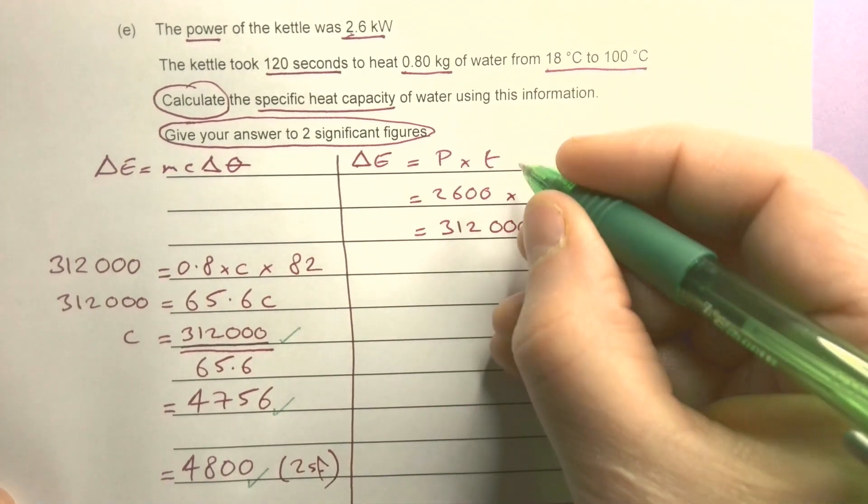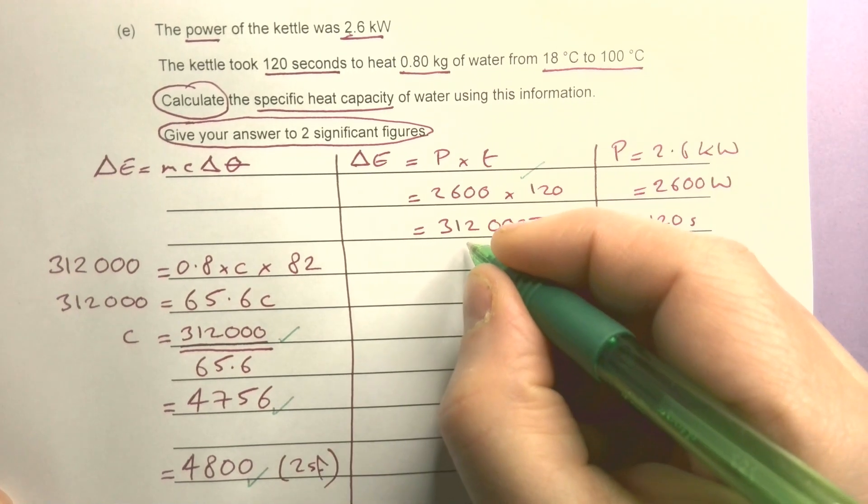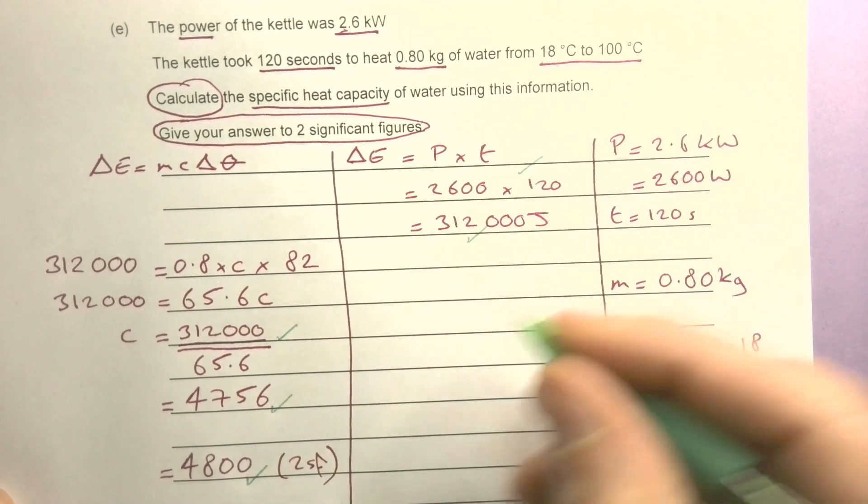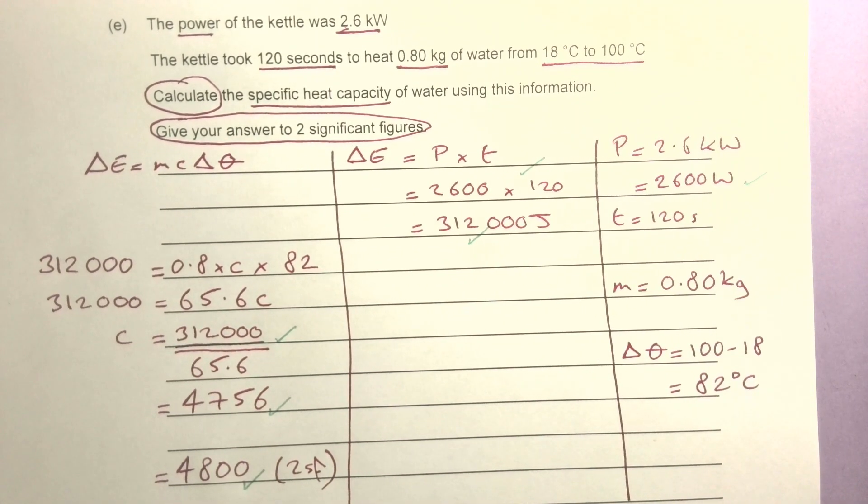One mark for 2 sf, one mark for that answer, one for the rearranging, one mark for substitution here, one mark for this answer - one, two, three, four, five - and one mark for changing that into watts. So quite a few ways there to get the marks.